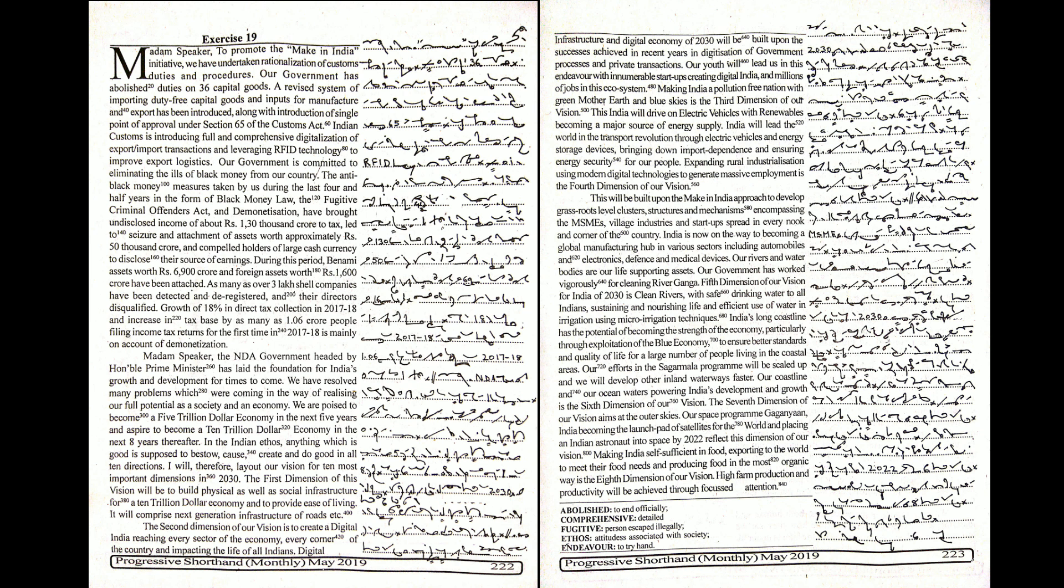Our government is committed to eliminating the ills of black money from our country. The anti-black money measures taken by us during the last four and half years in the form of black money law, the Fugitive Criminal Offenders Act, and demonetization have brought undisclosed income of about Rs. 130,000 crore to tax.